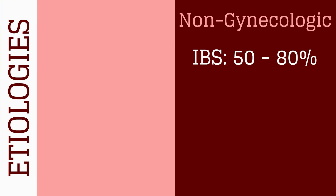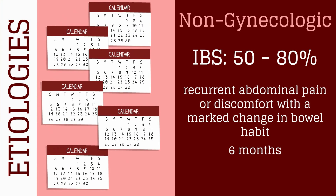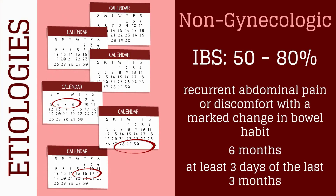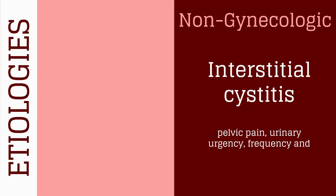Irritable bowel syndrome affects 50 to 80% of women with chronic pelvic pain. It is defined as recurrent abdominal pain or discomfort with a marked change in bowel habit for at least 6 months, with symptoms experienced on at least 3 days of the last 3 months. Interstitial cystitis is a chronic inflammatory condition of the bladder often characterized by pelvic pain, urinary urgency, frequency, and dyspareunia.